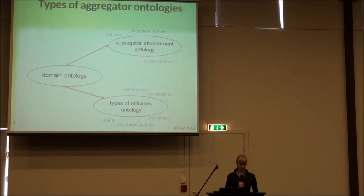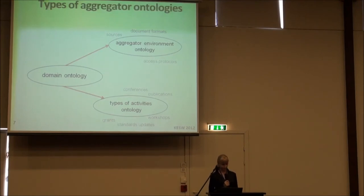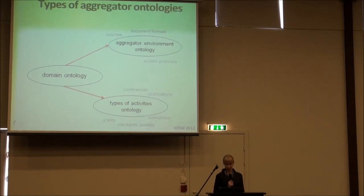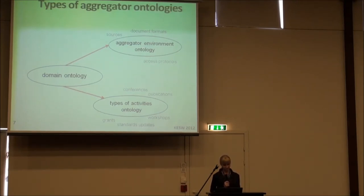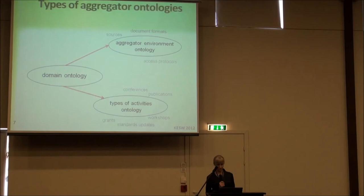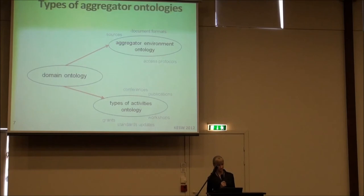There are three types of ontologies in the aggregator. The first is the aggregating grammar ontology, which stores information about sources, document formats, and access protocols. The second is an ontology of types of activities, storing information about user events such as conferences, publications, and workshops. The third is the domain ontology, which contains domain structure and makes the aggregator flexible and customizable to user needs.